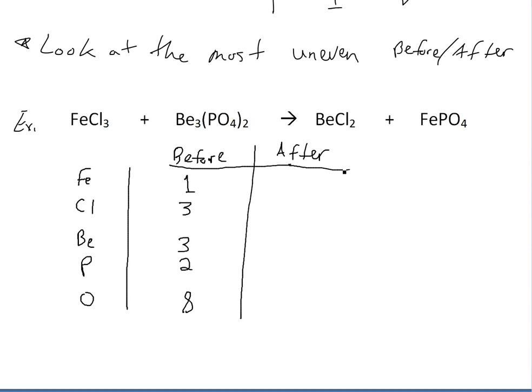And then if we look at on this side. Fe is one. Cl is two. And then again this one, so Cl is two. Be is one. P is one. And O is four.